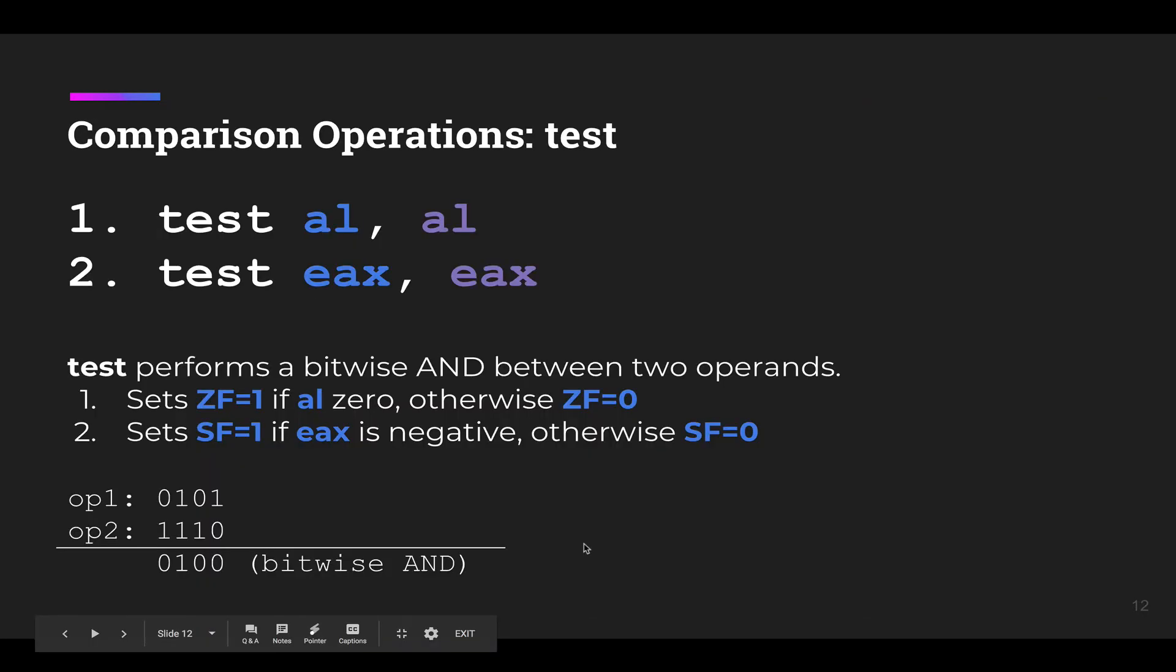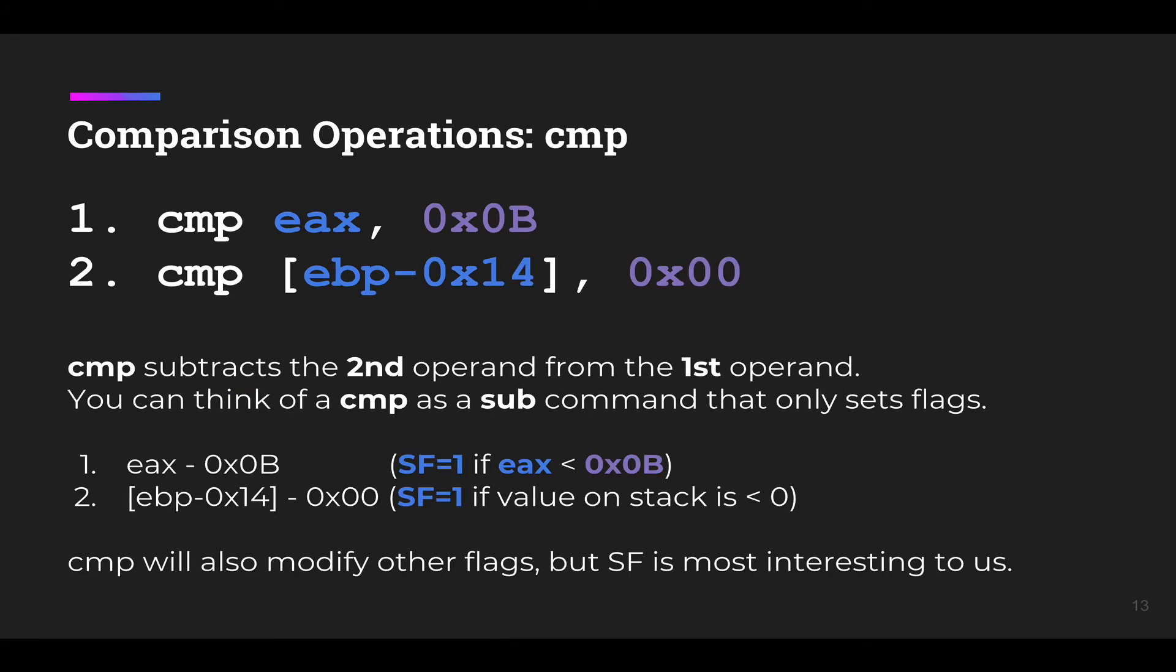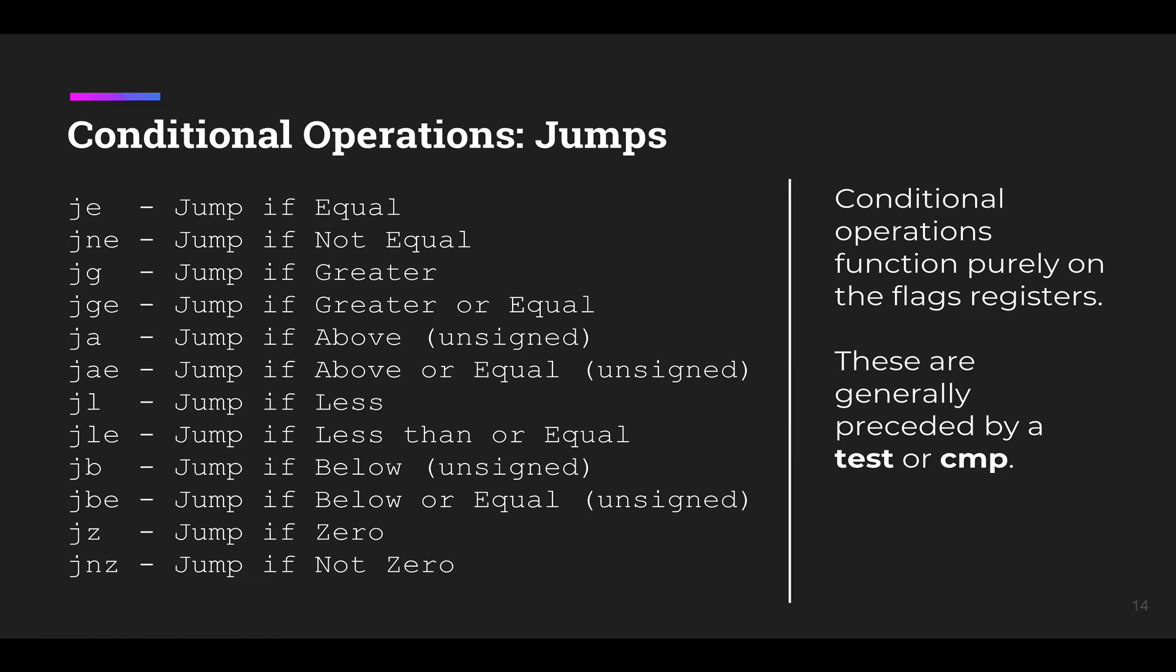So it turns out these flags are really important because there are comparison operations that are going to set them, and then there are other operations in turn that are going to use the value that's in those flags registers. There's two primary operations that we're concerned about in terms of comparisons or setting those flags. One of them is a test, and a test performs a bitwise AND between two operands and then ends up setting the zero and sign flags accordingly. The comparison or CMP operator essentially performs a subtraction without modifying registers. So if you do a subtraction, not only will it set the flags register or those bits in there, it's going to also modify the destination register. When you do a comparison, it does this pseudo-subtraction but does not modify the destination register. Now that's really important to us because usually a couple of instructions after a comparison or a test is going to be some conditional operation that is going to cause control flow to branch to the left or to the right or to do something very special.